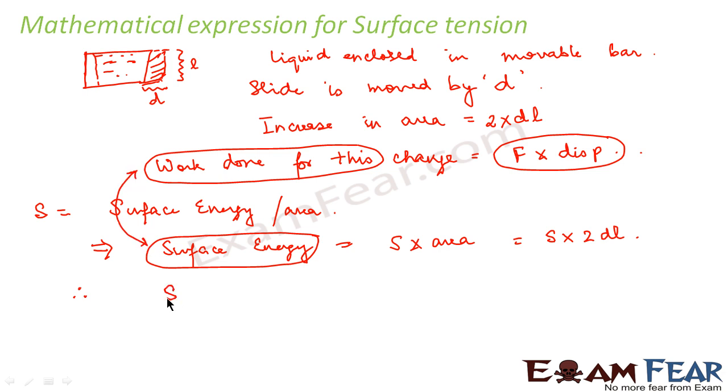Therefore, we can say S into 2DL, that is the surface energy, is equal to the work done for this change, that is force into displacement. So displacement is D. Therefore, this D and this D will get cancelled and we get surface tension S is equal to F divided by 2L. So we can say that surface tension is force per unit length.